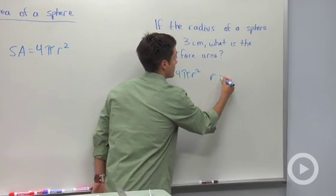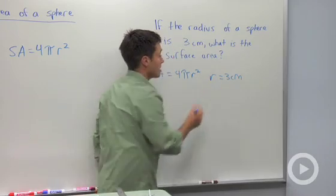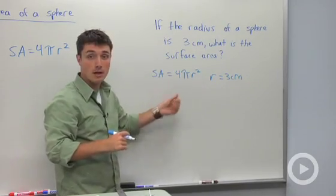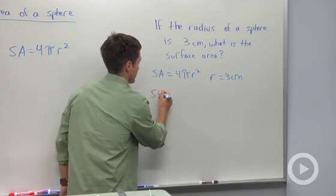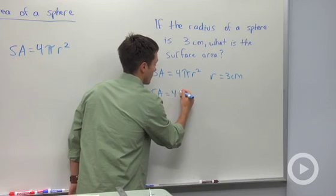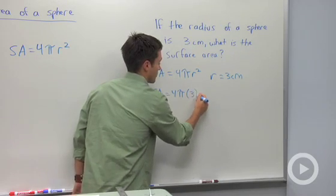And then we'll say our radius is three centimeters. So then we just need to substitute in and we'll know our surface area. We'll say that surface area is equal to four times pi times three squared.